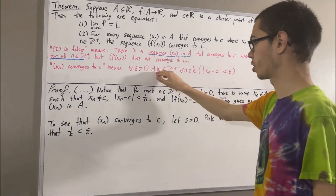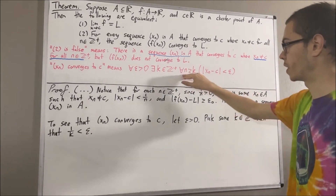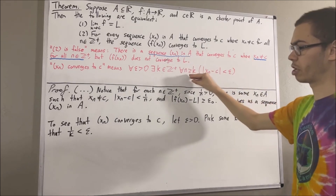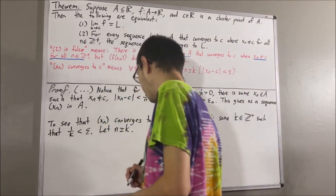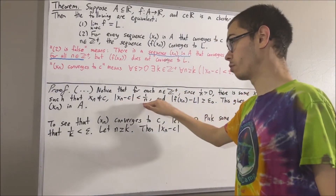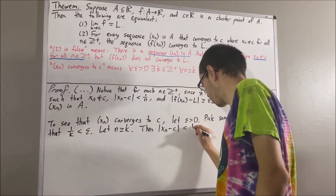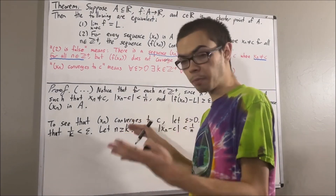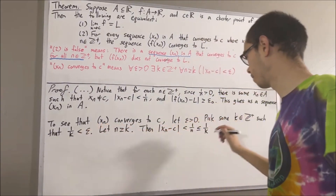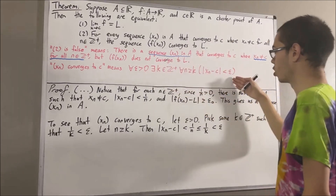Our claim is that K is the positive integer we're looking for. Taking K to be the K we have here, we proceed to prove the statement. Since we're trying to prove a statement about all positive integers N greater than or equal to K, let's give ourselves an arbitrary such N. We know the absolute value of Xn minus C is less than one over N for all positive integers N, so in particular it's less than one over N. Since N is greater than or equal to K, taking reciprocals gives one over N is less than or equal to one over K, and one over K is less than epsilon. So the absolute value of Xn minus C is less than epsilon. This proves Xn converges to C.